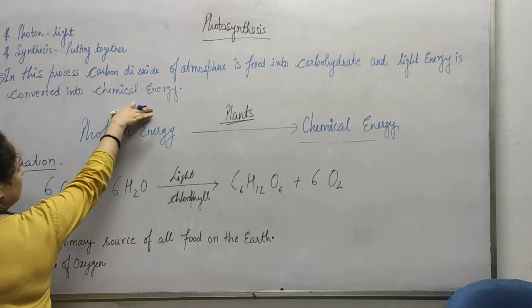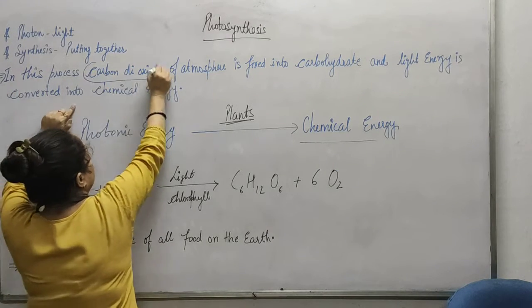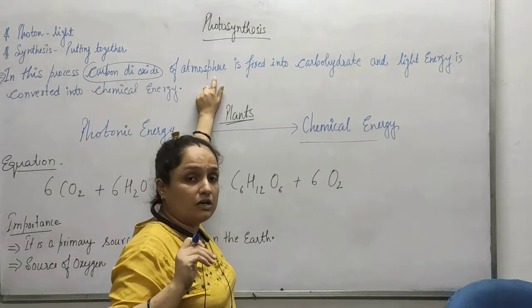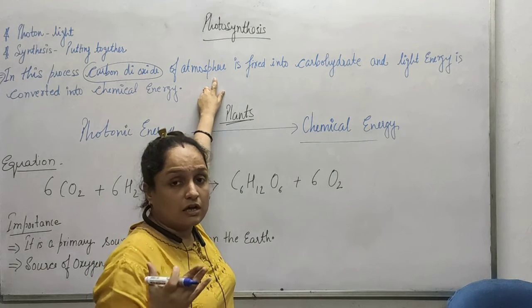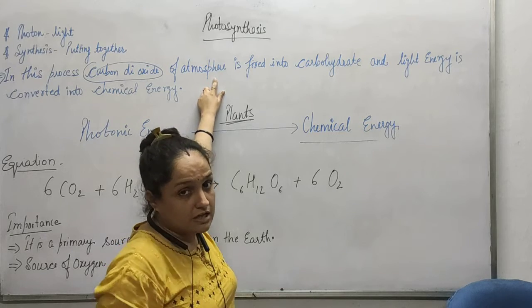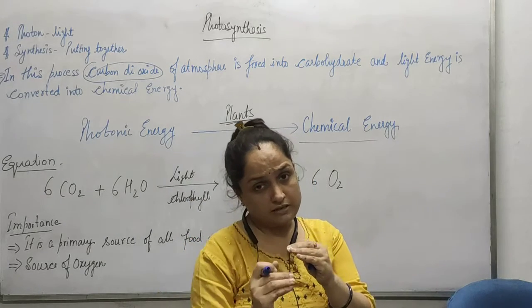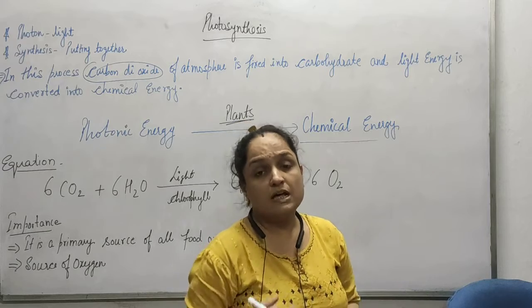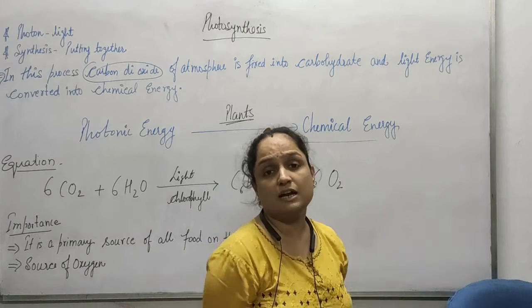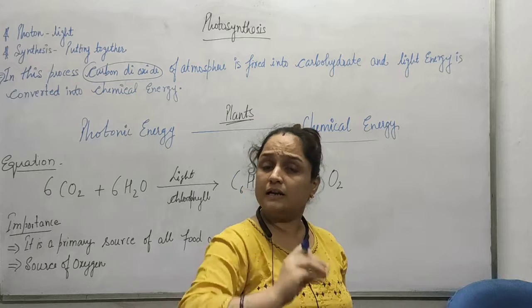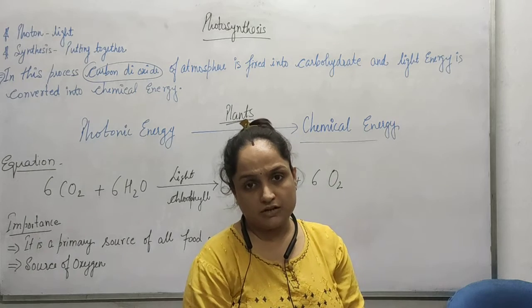Now we are going to talk about the process known as photosynthesis. In this process, carbon dioxide from the atmosphere is trapped. The atmosphere gets this gas because we organisms are respiring. In the process of respiration, whatever food we took is broken down into simple components so that our body can absorb it, and we release carbon dioxide. That is the carbon dioxide released into the atmosphere — by us, by plants, and by other organisms as well. These are the sources of carbon dioxide in the atmosphere.